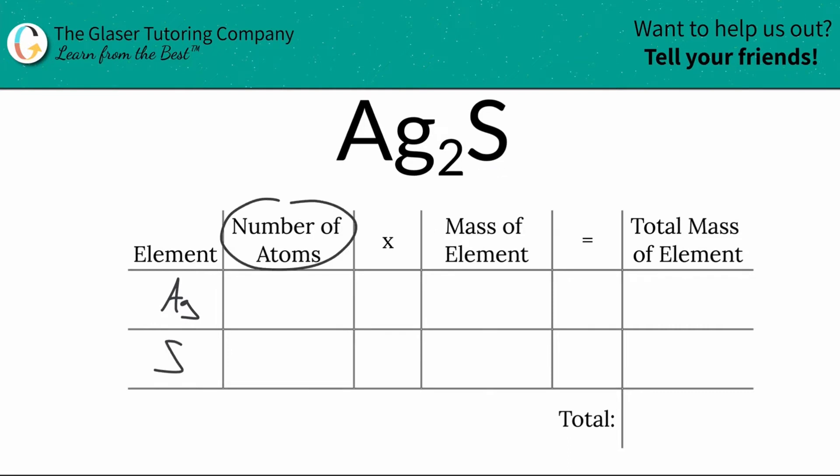The next thing is I need to know the number of atoms of each particular element in this compound. That's where the subscripts come into play. This two down here tells me that I have two silvers, and then there is an invisible one at the bottom of sulfur. So I know I have one sulfur.